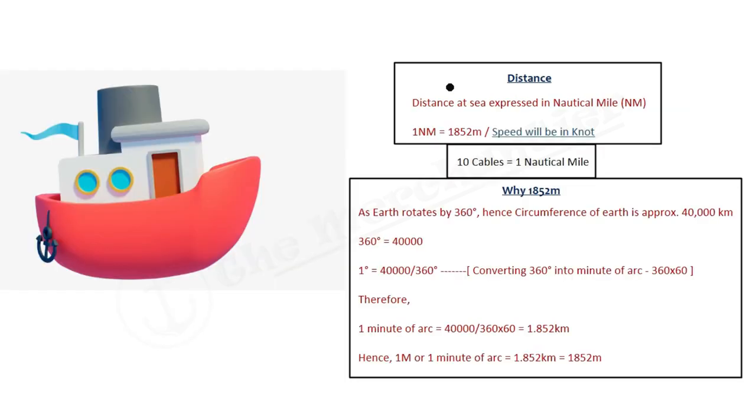So now we will discuss distance. When a vessel travels in the sea, distance at sea is expressed in nautical miles. We know that one nautical mile equals 1852 meters.